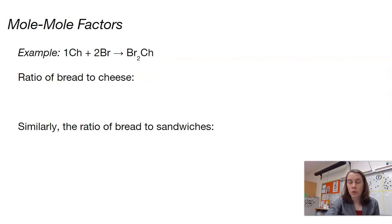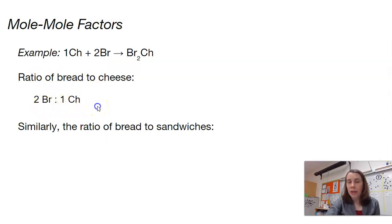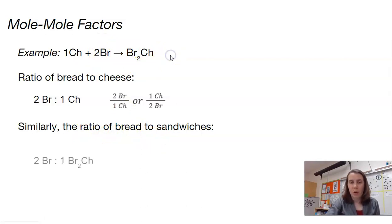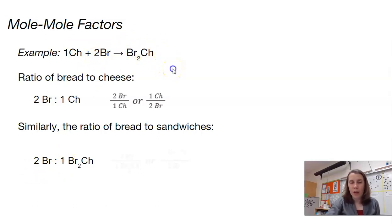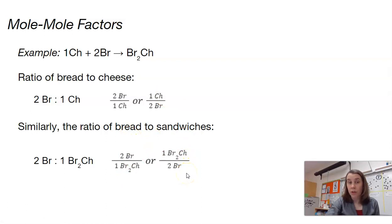In order to use these ratios, we have to make them into conversion factors. In our cheese sandwich example, if we have a ratio of bread to cheese, we know that ratio is two to one. We can write that as either two bread over one cheese, or one cheese over two bread, depending on what kind of conversion we're doing. Similarly, we could have a ratio of bread to sandwiches — that would also be a two-to-one ratio because we have a two in front of our bread and we make one sandwich.